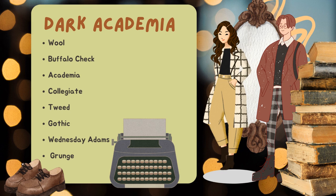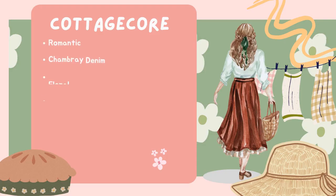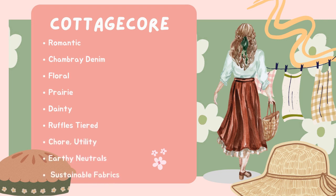I'm going to go over a few styles to show how you can use keywords to bring more people into your store. One of the most popular right now is cottagecore — use it if it's relevant. Within cottagecore you could include: romantic, chambray denim, floral, prairie, dainty, ruffle or tiered, chore or utility, earthy neutrals, and sustainable fabrics. If your fabric is sustainable, put the word 'sustainable' on there — it's one of Poshmark's favorite words. Within Poshmark's blog, 'essential' and 'sustainable' are mentioned over and over.